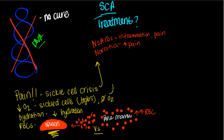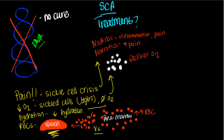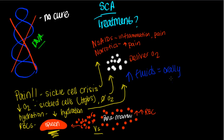For the oxygen issue, if we know we're lacking oxygen, we deliver it — via an oxygen delivery device, an oxygen mask, or a nasal cannula. For hydration, we're going to increase fluids. We can encourage the person to drink more orally, or we can give fluids intravenously — especially in an emergent state, such as when someone comes in with a sickle cell crisis.